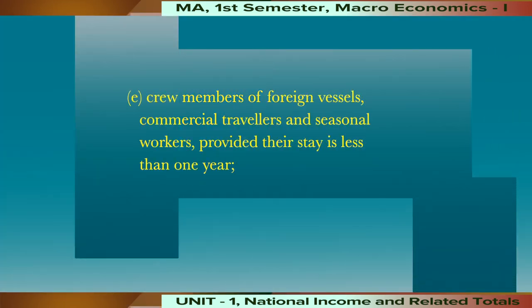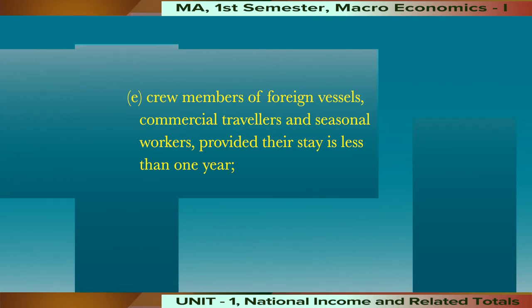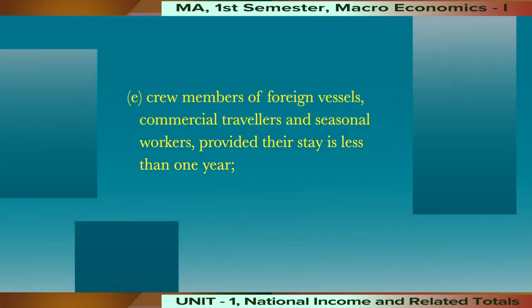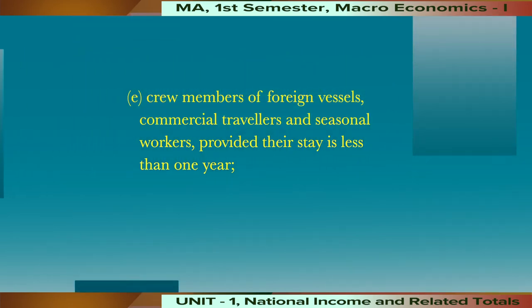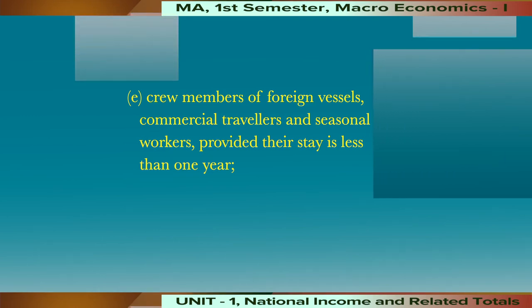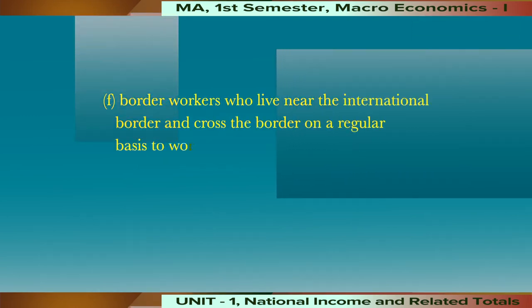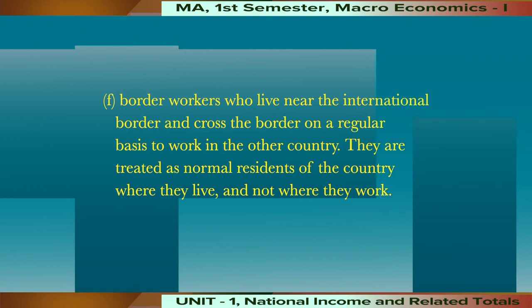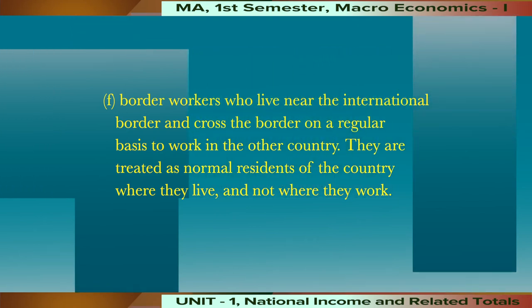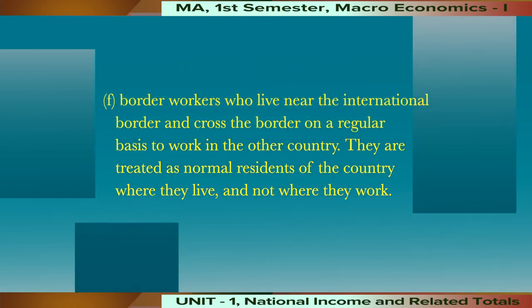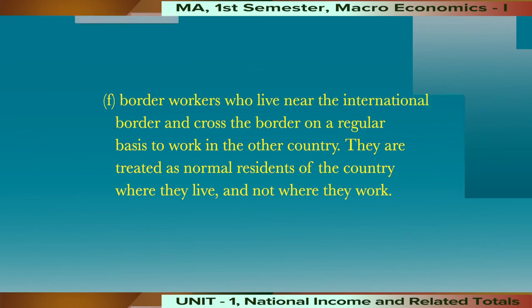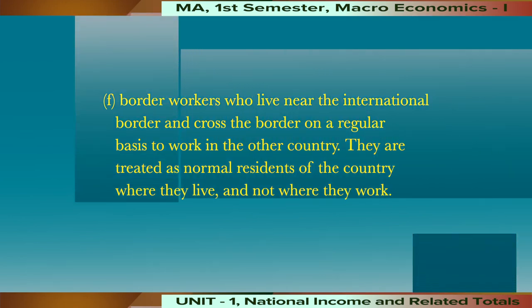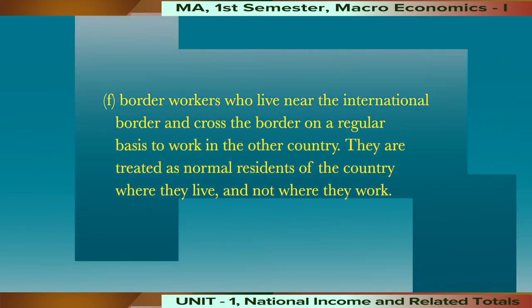Fifth, crew members of foreign vessels, commercial travelers, and seasonal workers, provided their stay is less than one year. And sixth, border workers who live near the international border and cross the border on a regular basis to work in the other country. They are treated as normal residents of the country where they live and not where they work.